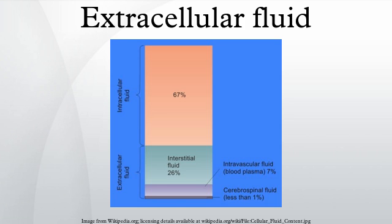Constituents: Main cations — sodium, potassium, calcium. Main anions — chloride, hydrogen carbonate. ECF is poorer in proteins as compared to intracellular fluid. Ionic composition: Na+ 150, K+ 5, K 110.